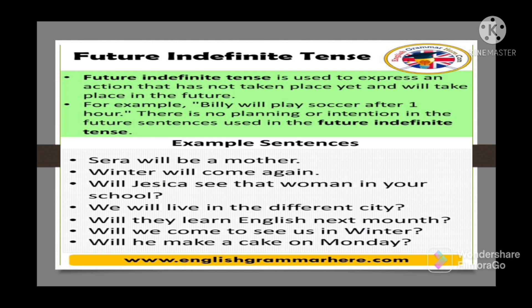There is no planning or intention in the future sentences used in the future indefinite tense. Let us see the examples here: Sarah will be a mother. Winter will come again. Will Jessica see that woman in your school? We will live in the different city. Will they learn English next month? Will we come to see us in winter? Will he make a cake on Monday?